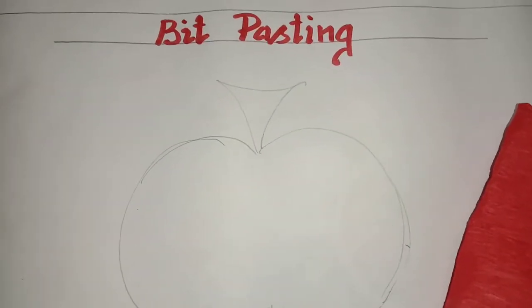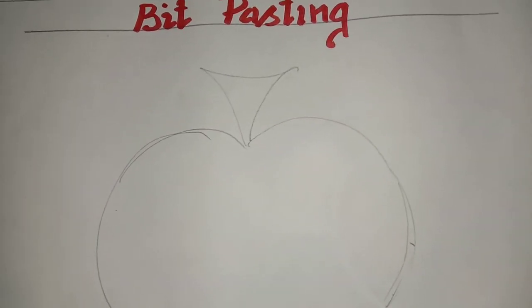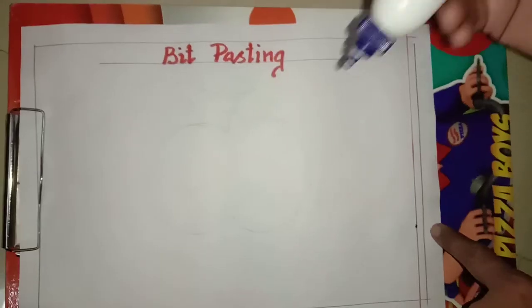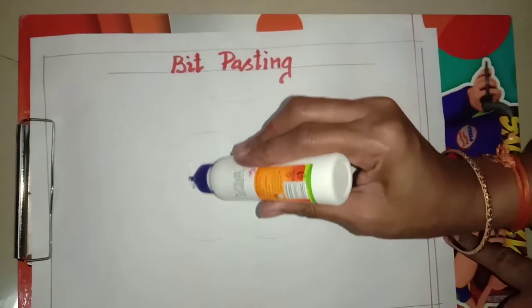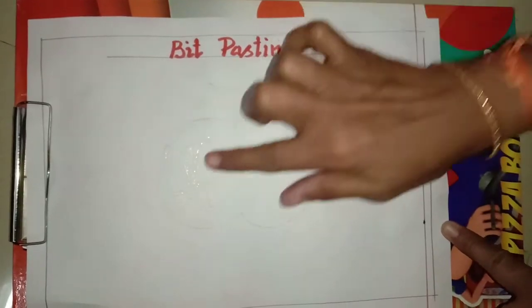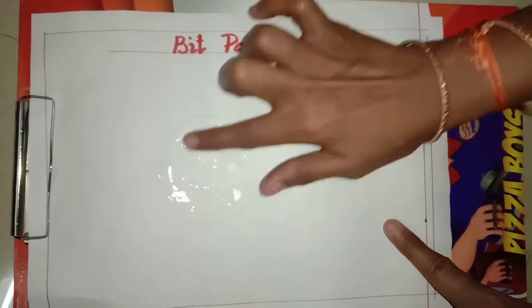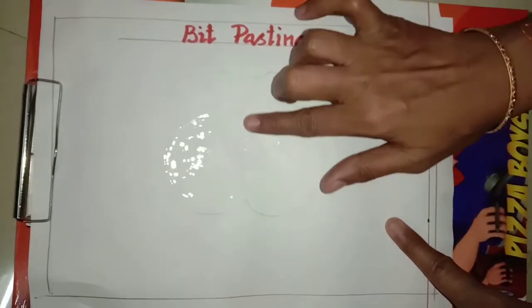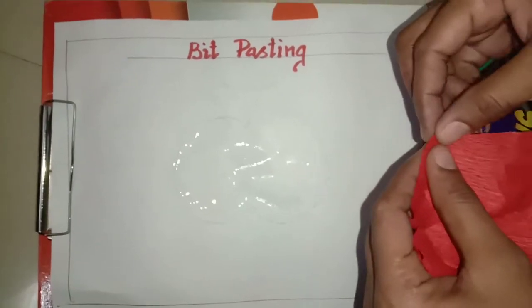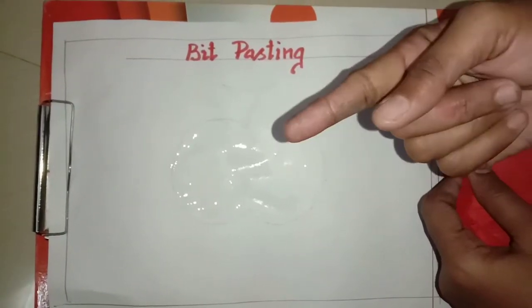If you don't have the color paper, you can make use of newspaper. You should tear it and paste it down. So how do you apply fevicol? You should use the thumb finger and the pointer finger to apply it.